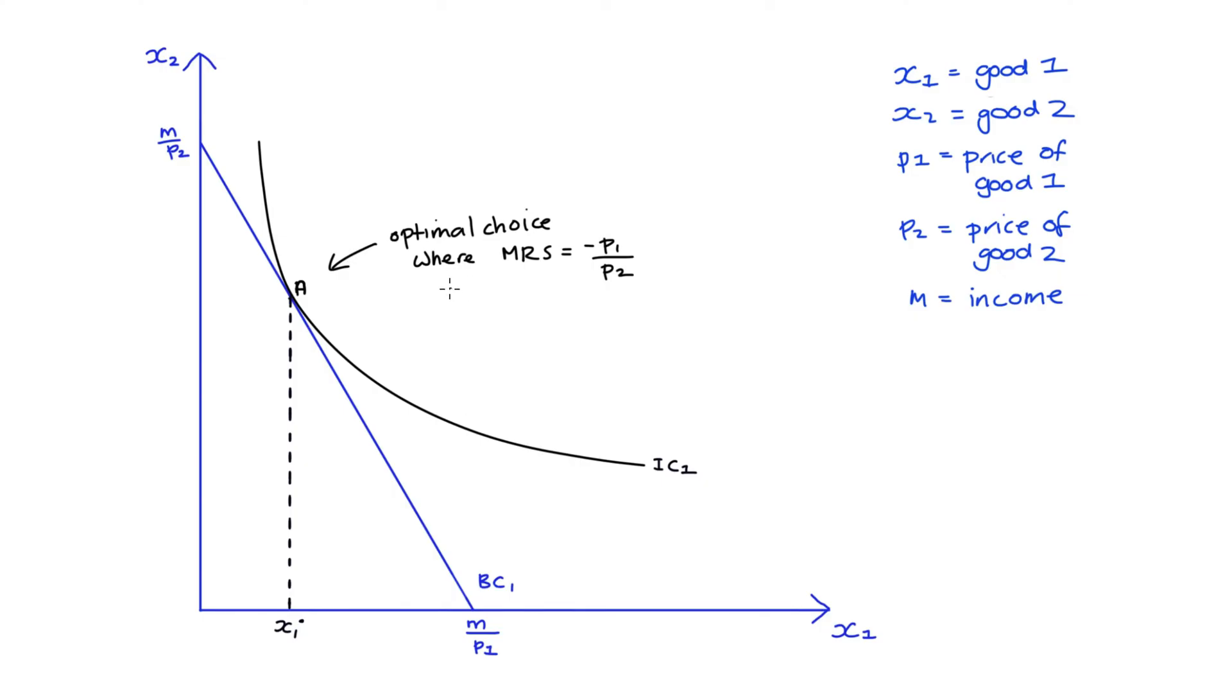So this point will put us on the highest indifference curve that is possible given our budget. So I do have other videos that can support you here if you don't understand this diagram. I'll link to them in the description. The concern of this video is understanding what happens when the price of one of these goods changes. And in particular let's think about the effect of a reduction in the price of good one.